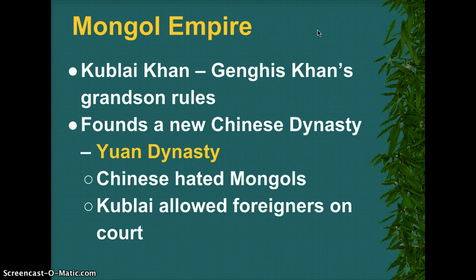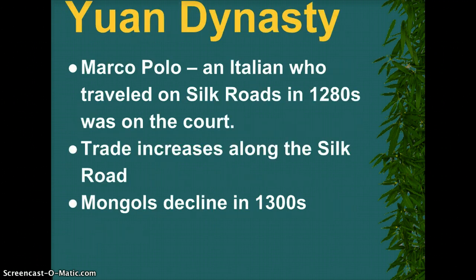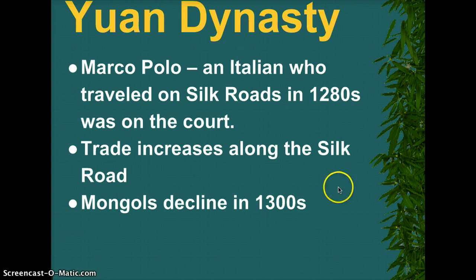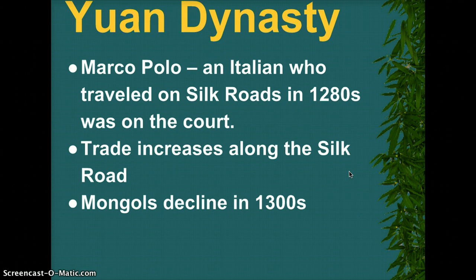Kublai Khan is going to try to win the Chinese people's approval by allowing some of them to be on his ruling court. There's going to be an expansion of trade during this time period. In particular, one well-known Italian — Marco Polo — came on the Silk Roads and traded, not surprisingly, silk, and also porcelain. About 100 years after starting, in the 1300s, the Mongols are going to dissipate.